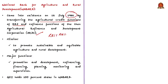Coming to its mission, NABARD aims to promote sustainable and equitable agriculture and rural development. Its major functions include promotion and development, refinancing, financing, planning, monitoring and supervision with respect to agriculture and rural development. And Government of India holds 100% stake in NABARD.